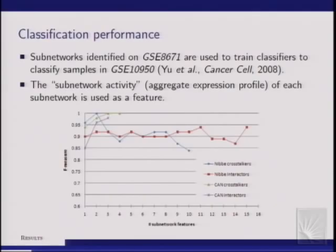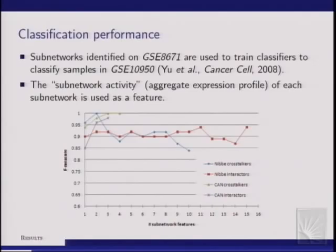The CAN cross-talkers and CAN interactors are there for control purposes — found by applying the same idea to known driver genes of colon cancer. We consider the known driver genes as seeds and identify cross-talkers and interactors similarly. The cross-talkers of the driver genes provide quite good performance in classification, and the proteomic seeds do not do any worse either.